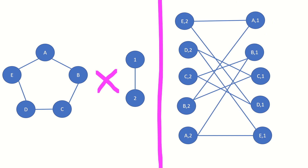Here is our previous tensor product arranged to show its bipartite structure. In a bipartite graph, there are two independent sets of vertices — sets of vertices that are not connected to each other — one for each copy of the left graph, as each vertex in a copy is only connected to vertices in the other copy. The result of the tensor product of any graph G with a path graph with two vertices is known as the bipartite double graph of G.